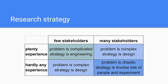When a problem has many stakeholders or covers many disciplines but has plenty of experience in solving the problem, we will call it complex rather than complicated. To solve a complex problem, you usually use design methods to investigate the problem and try out possible solutions. The same goes for problems which only have a few stakeholders or cover a few disciplines but have hardly any experience with solving them — they are also categorized as complex, and again the strategy is to use design methods.